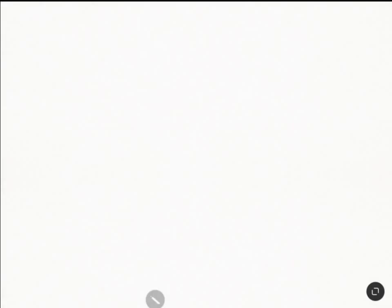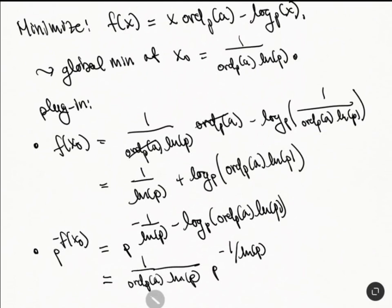And then this thing will just become 1 over e. So p to the minus 1 over natural log of p, well this is just e to the ln of p minus 1 over the natural log of p, and so that's just e to the minus 1. And so that proves the result. That proves this bound here, this bound that we were talking about.